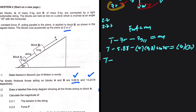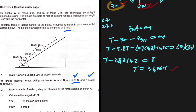So we have tension minus 5.88 minus 4 × 9.8 × sine(35) equals 4 × 2. Putting that into the calculator gives minus 28.3642 equals 8. So the tension equals 8 plus 28.3642, which gives a tension of 36.36 newtons. That is the tension in the rope for question 2.3.1.